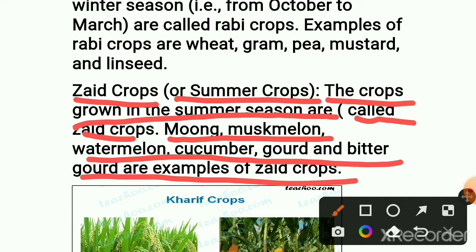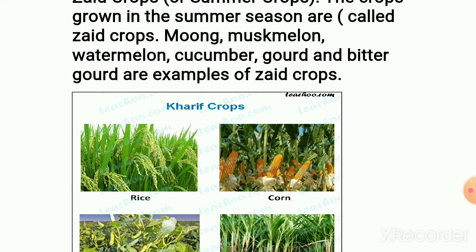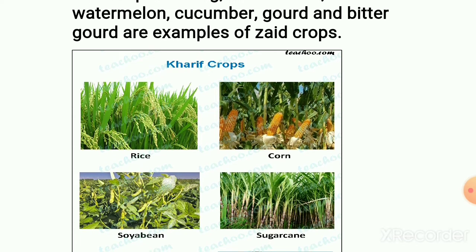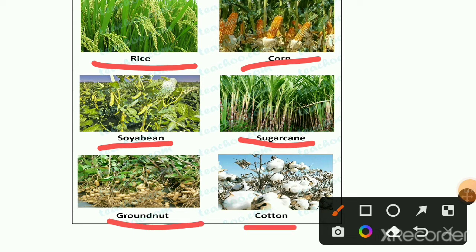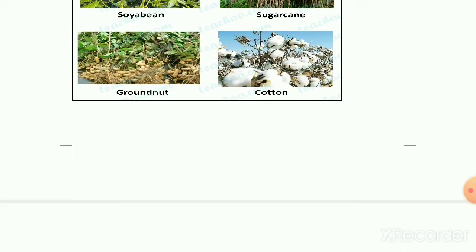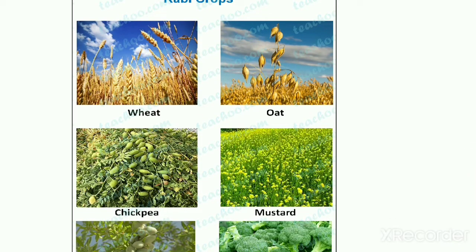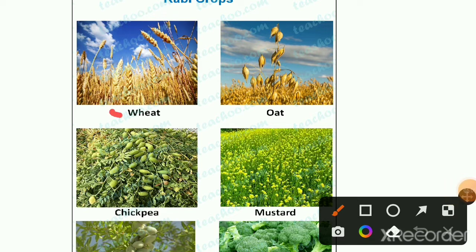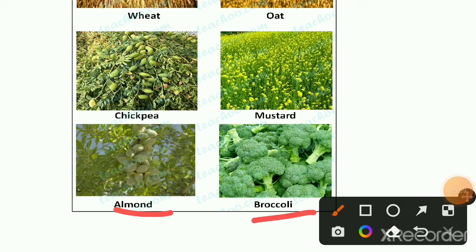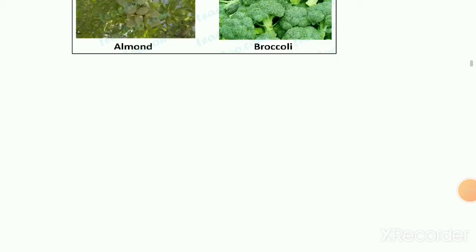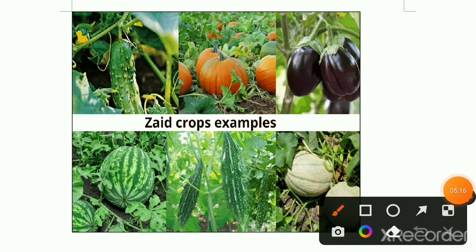Now let's see some examples of each crop type. Kharif crops — examples include rice, corn, soya bean, sugarcane, groundnut, and cotton. Rabi crops — examples include wheat, oats, chickpea, mustard, almond, and broccoli. Zaid crops — examples include bitter gourd, pumpkin, eggplant, watermelon, muskmelon, and gourd. There are many examples for each type; these are the well-known ones.